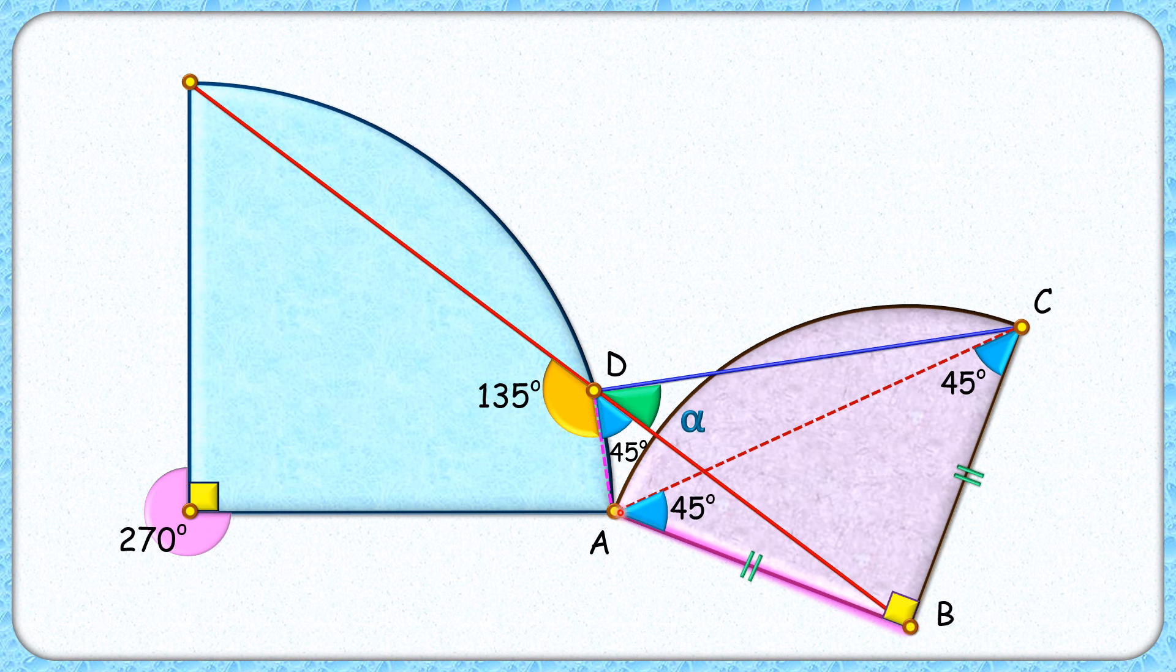By theorem, these points A, B, C, D are all concyclic, so they will lie on the same circle.